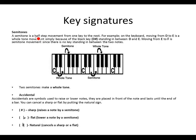A semitone is a half step movement from one key to the next. For example, on a keyboard, moving from D to E is a whole tone movement. This is because of the black key in between D and E. Here is D, and here is E, and here we have D sharp — the black key in between the two keys. This makes the movement a whole tone because there is a black key we are jumping over.